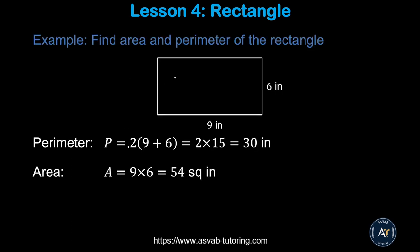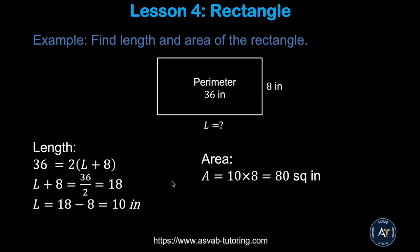Here is a rectangle with length equal to 9 and width equal to 6. Using the formula, perimeter equals 2 times (9 + 6), which is 2 times 15, giving 30 inches. The area is 9 times 6, which equals 54 square inches.